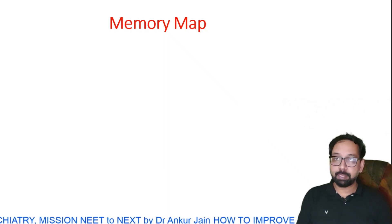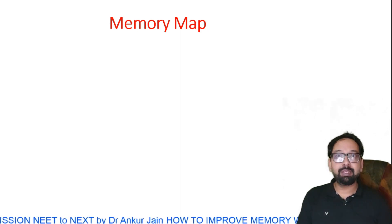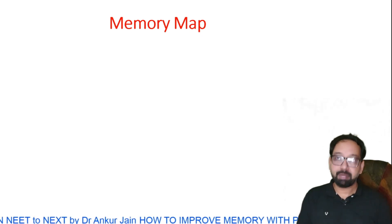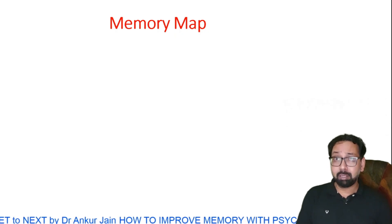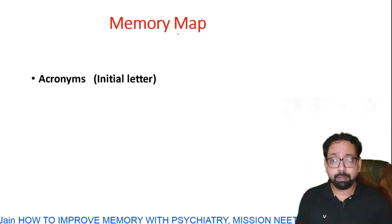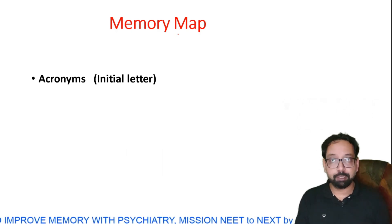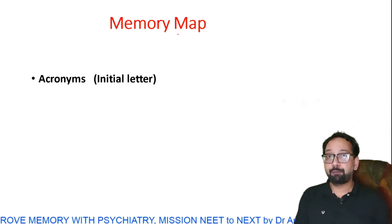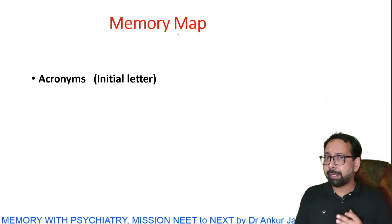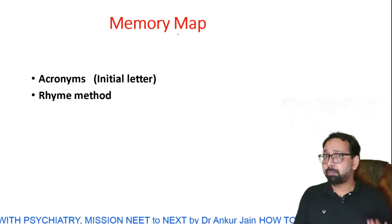Our next topic is ketamine, which I will discuss using a technique called memory map. This is a commonly used technique but we are usually not aware of it. I told earlier that picture mnemonic is one way to remember anything effectively, but you can't apply the same concept for every topic. Other techniques include acronyms — mnemonics made of initial letters — but we usually forget which acronym was for which topic. Another technique is the rhyme method.